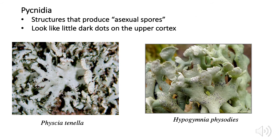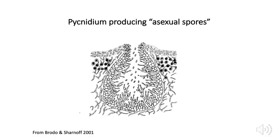One more asexual reproductive structure worth knowing about is pycnidia, because they occur pretty commonly in some of the lichens we'll get to know. Pycnidia produce a sort of asexual spore called conidia. In practice, they look like little dark dots on the cortex — a little bit like an apothecium, but the spores they produce are asexual. Here's a drawing so you have some idea of what's inside those little dots.